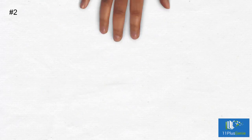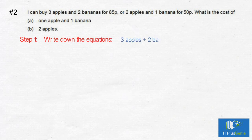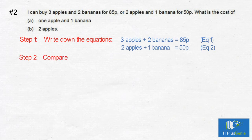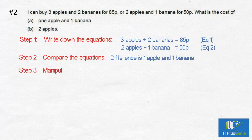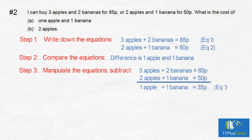Example 2. I can buy three apples and two bananas for 85p, or two apples and one banana for 50p. What is the cost of (a) one apple and one banana? Three apples plus two bananas equals 85p; two apples plus one banana equals 50p. We can see that the difference between the two statements is one apple and one banana, so we subtract the second statement from the first: one apple plus one banana equals 35p.